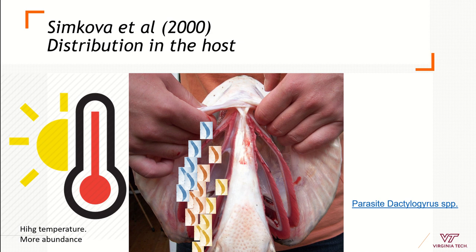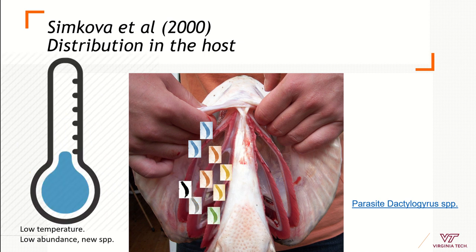If the temperature in the water changes — for example, if I have high temperature — I'm going to have a high number of individuals for a population of three different species. But if the temperature drops in cold waters, I'm going to have less abundance but more species. This shows how environmental conditions can explain the presence or abundance of parasite species.